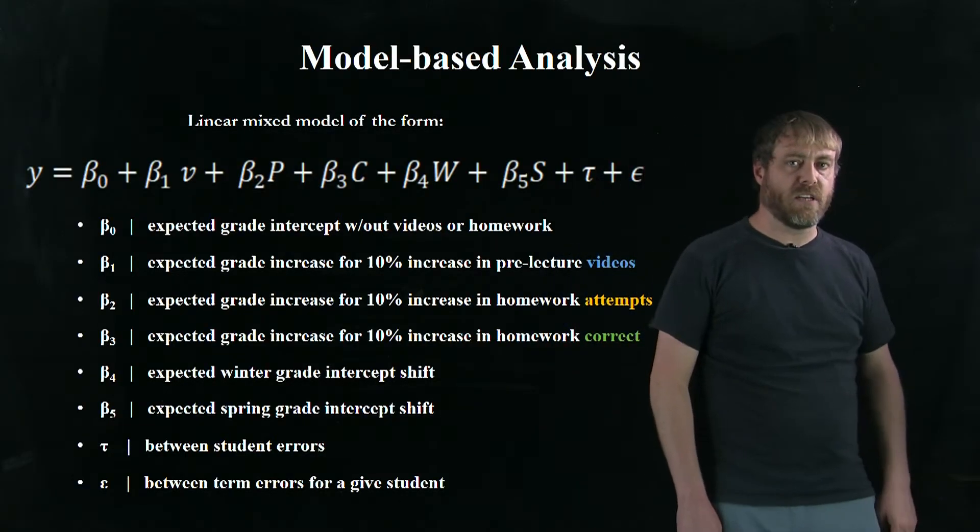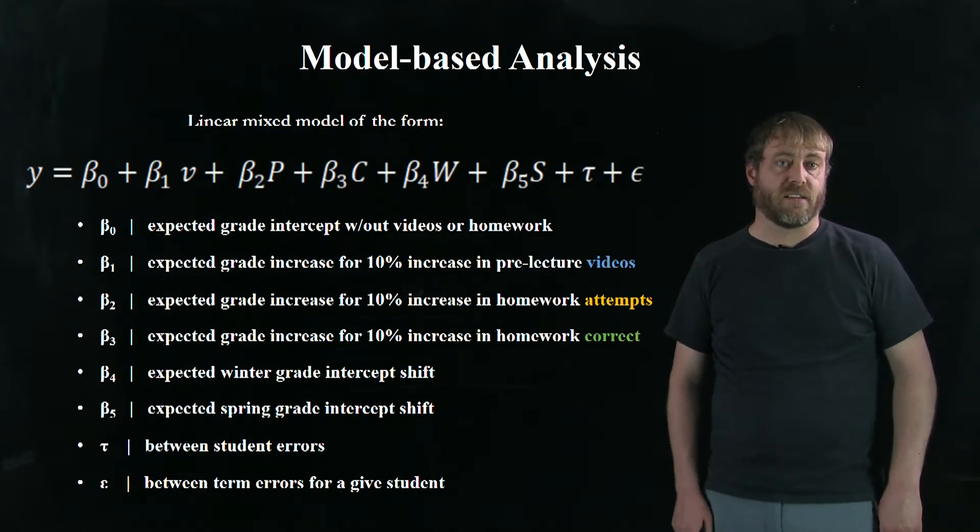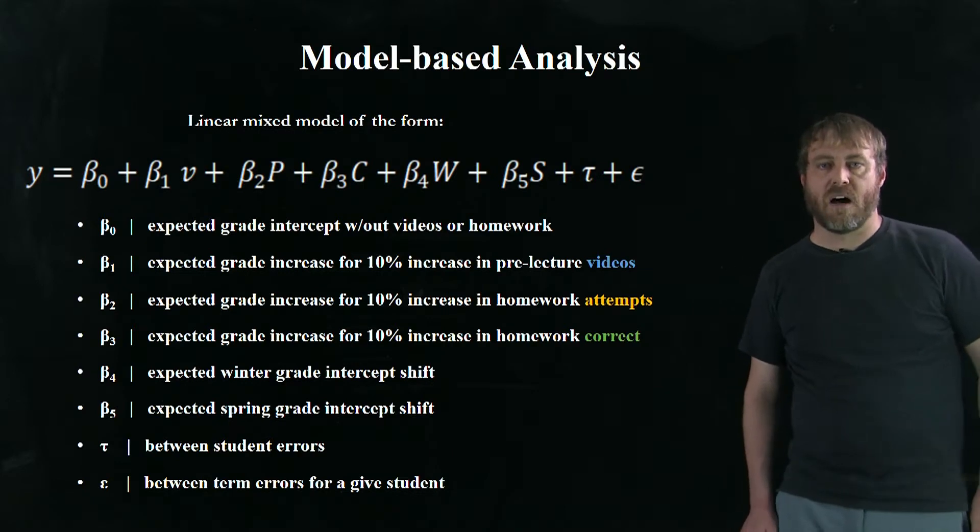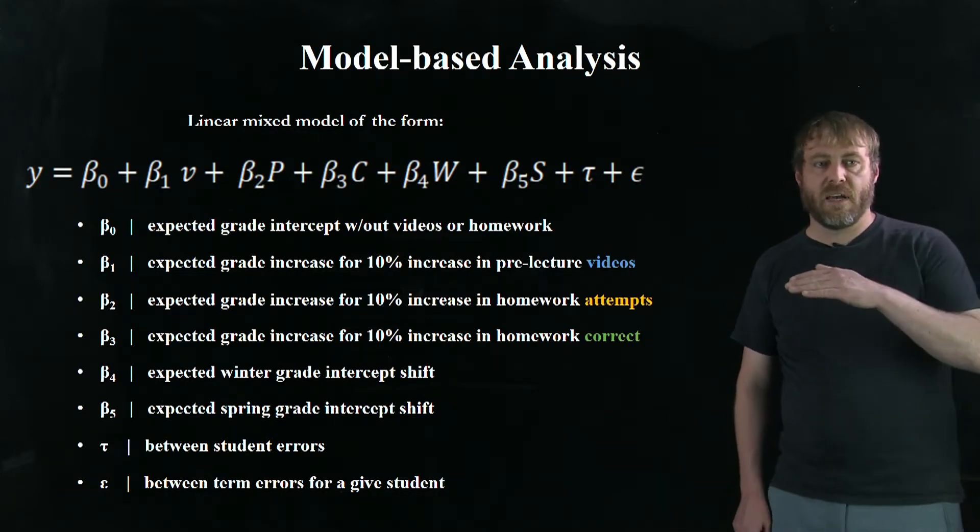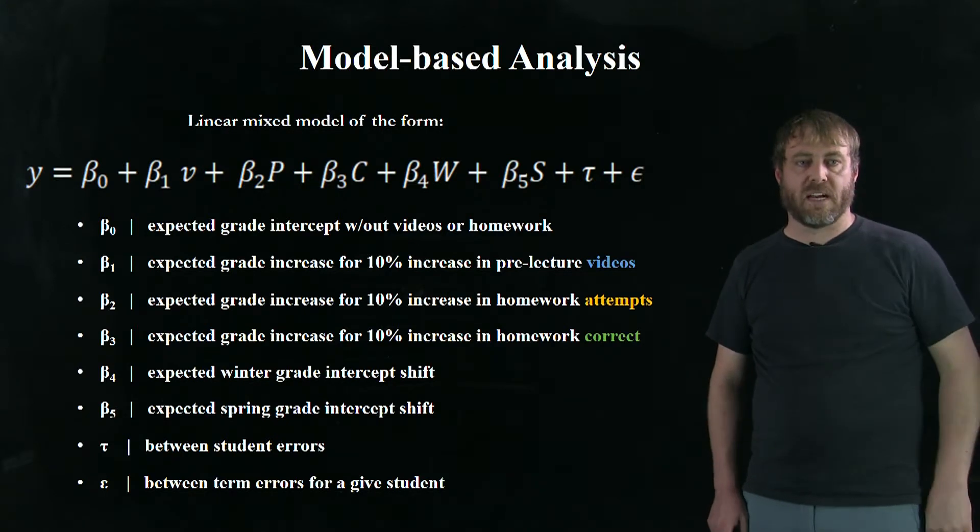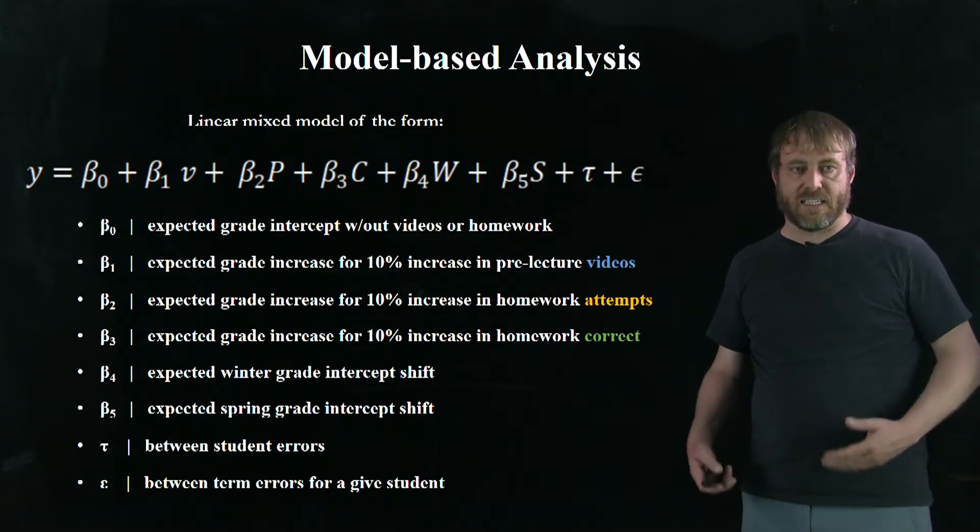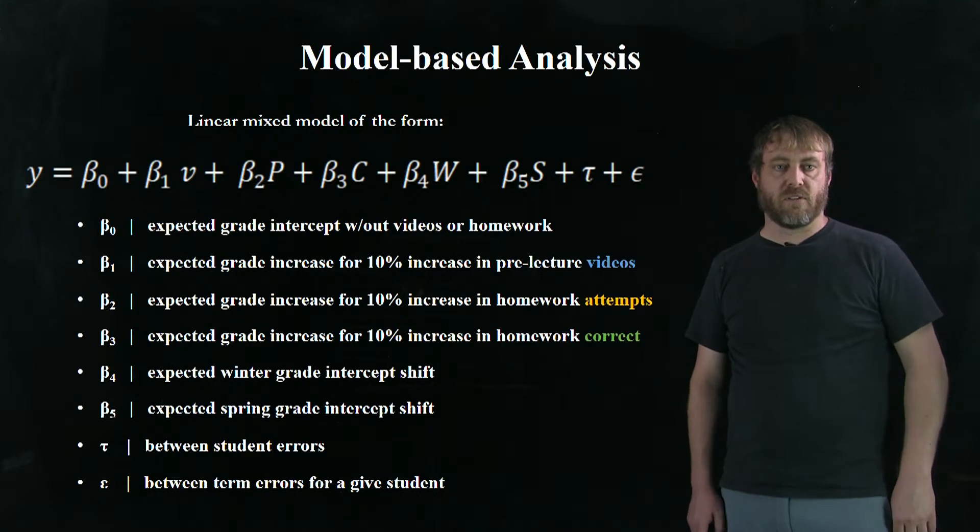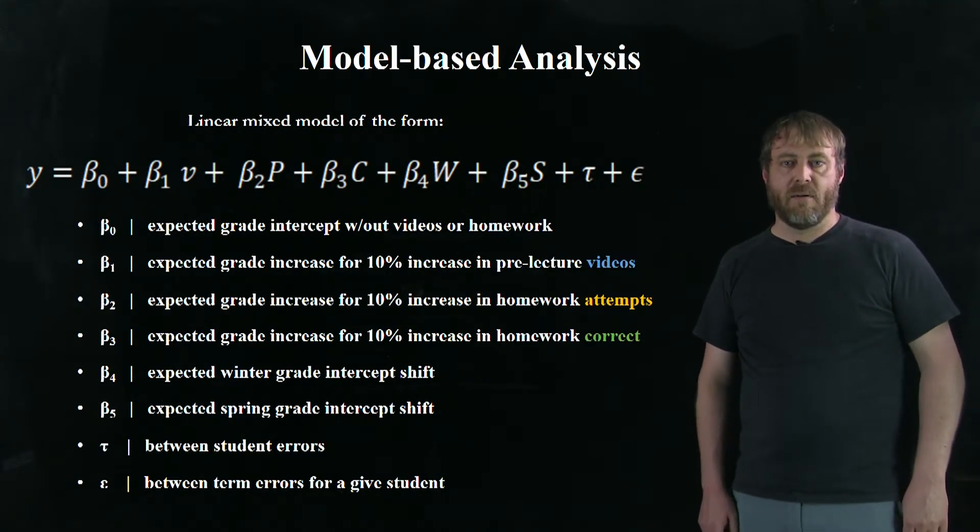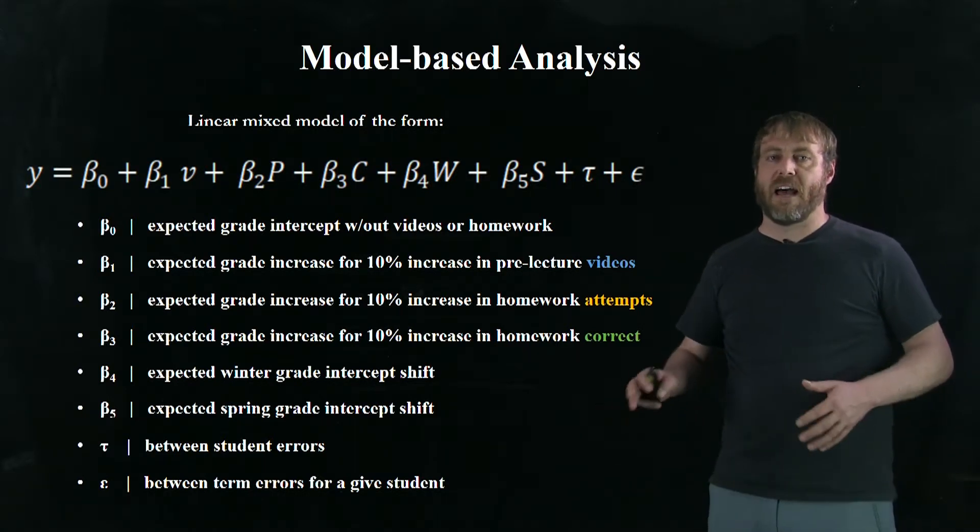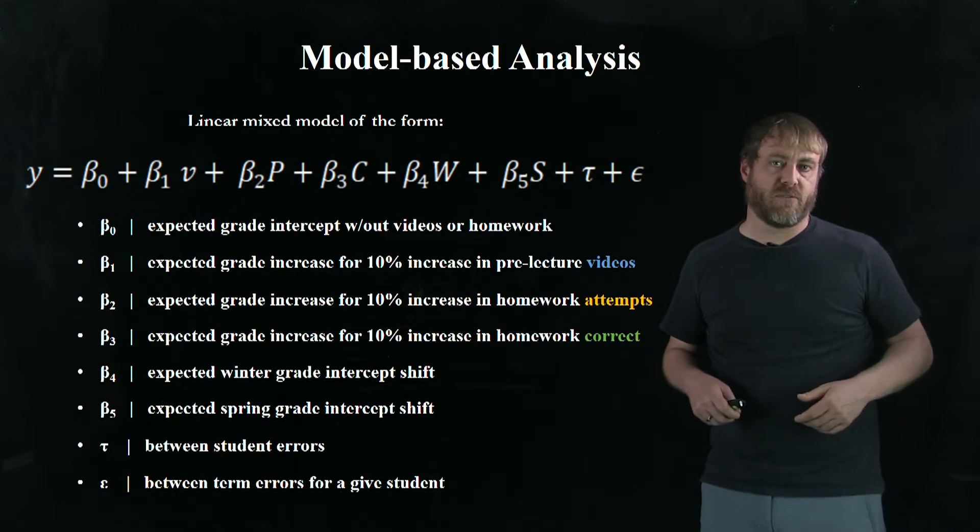So we used all of that information to help inform a hypothesis model based analysis. And our hypothesis was that videos, homework attempts, and getting the homework correct actually could be used to predict final grades. So we created this model, a linear mixed model. And the important terms here are beta one, two, and three. Beta one is how much you can expect to have your grade increase by increasing 10% interaction with pre-lecture videos. Beta two is the same thing for attempting homework. And beta three is for increasing whether you got the homework correct or not. Beta four and five are the expected grade shift intercepts that we would expect from winter and spring respectively. And tau and epsilon are trying to quantify the amount of error that we have between students and between terms for a given student.